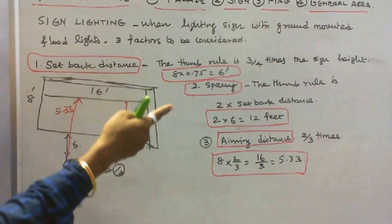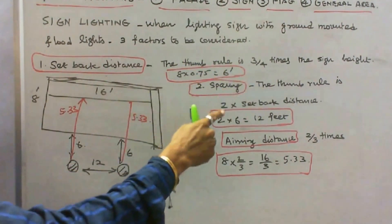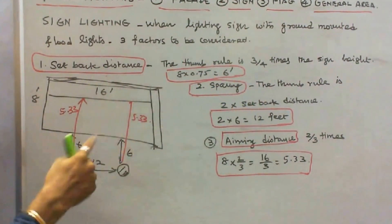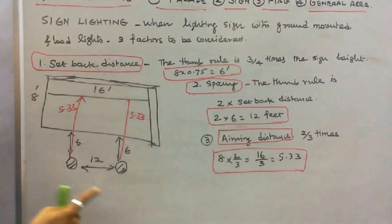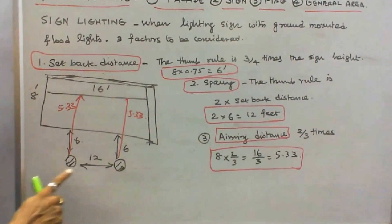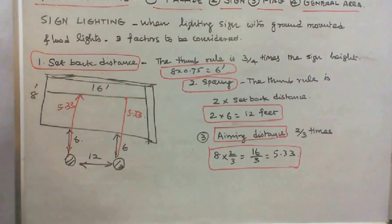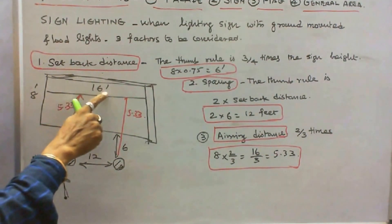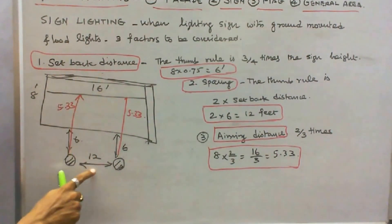The next factor is spacing. The thumb rule is 2 times the setback distance. The setback is 6, so 6 times 2 equals 12 feet. The distance between the two projectors is 12 feet. Here the sign width is 16 feet, so the projectors are spaced 12 feet apart.